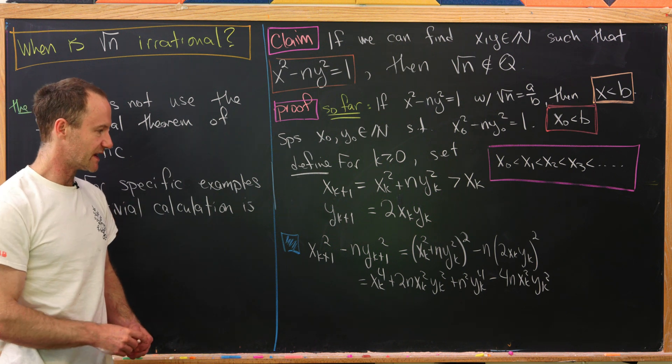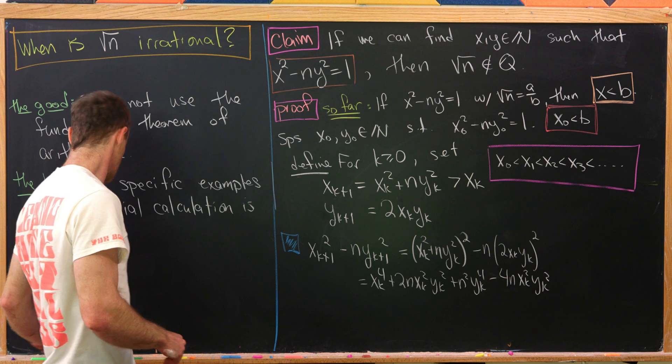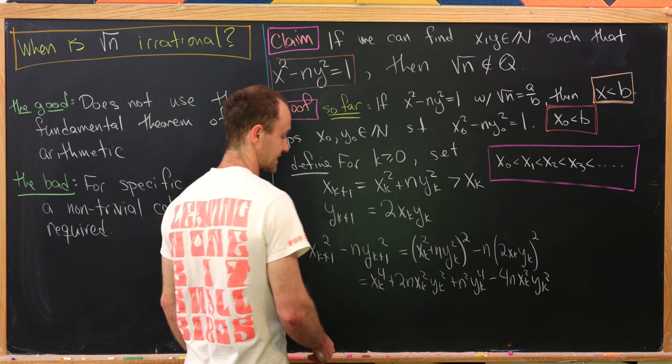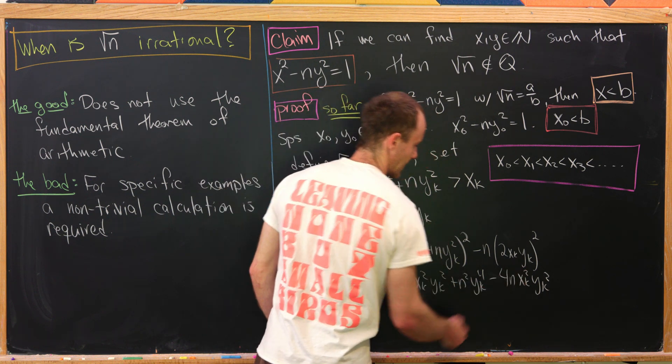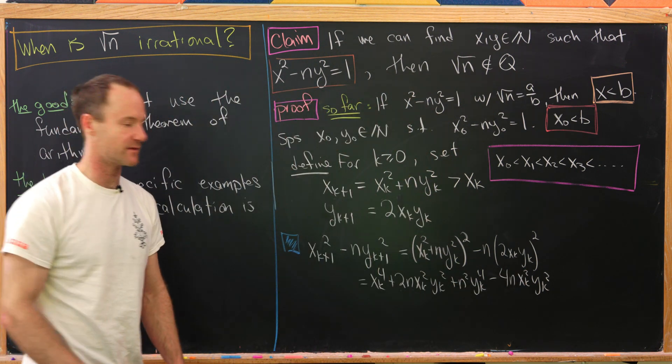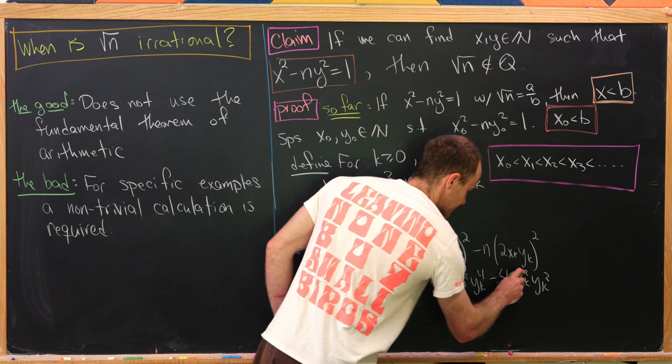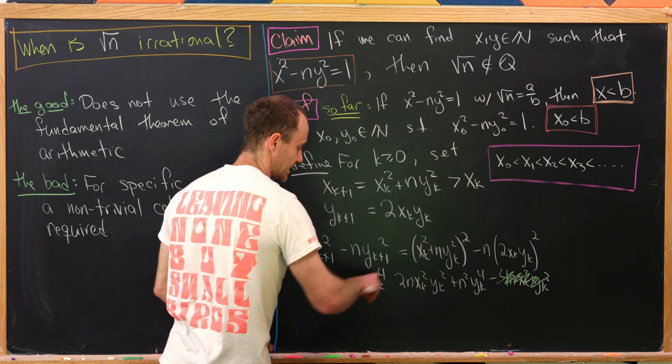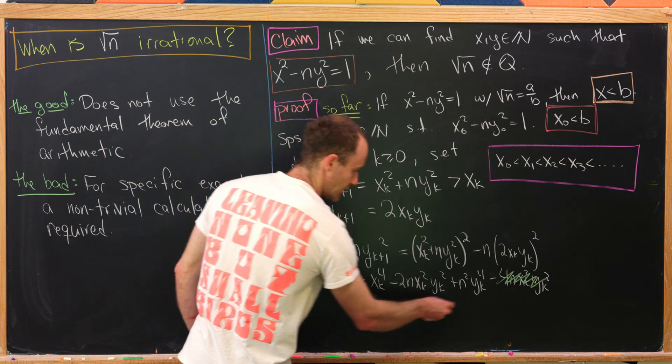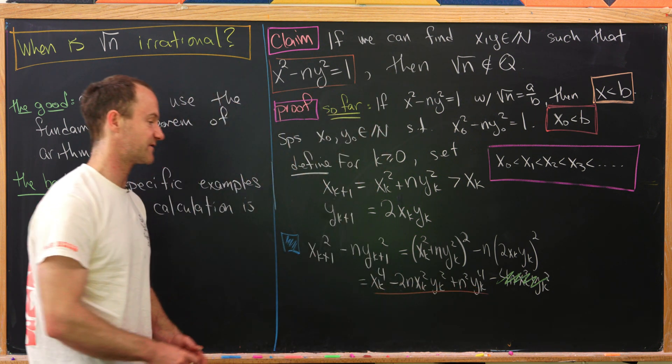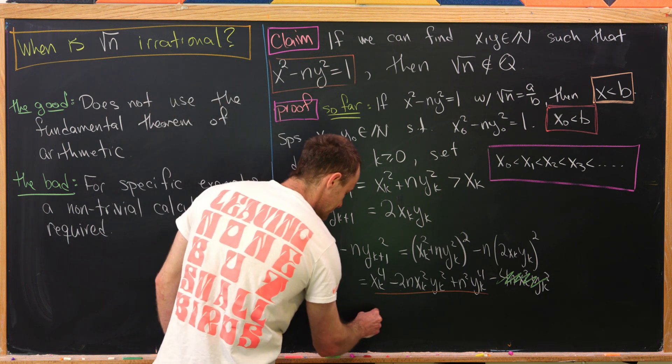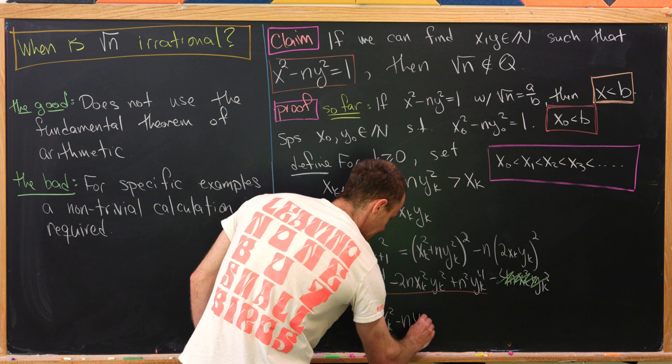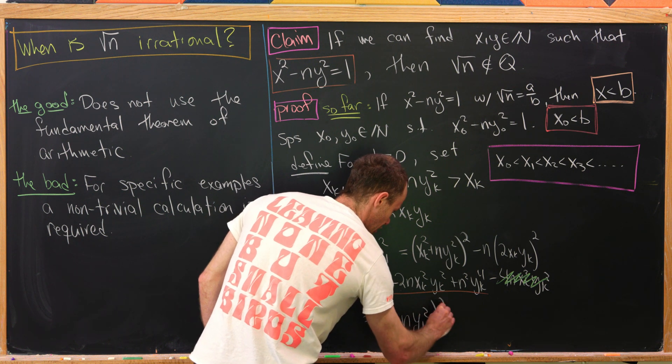But notice we can get some nice simplification here. This 2n times x sub k squared y sub k squared will simplify with this 4n times the same thing. In fact, we can scrub this 4n out if we just change this plus sign to a minus sign. And then what we're left with has a nice factorization. And that factorization is x sub k squared minus n times y sub k squared all squared.